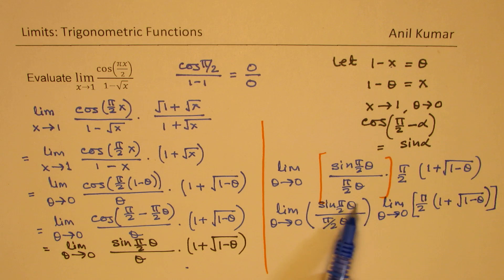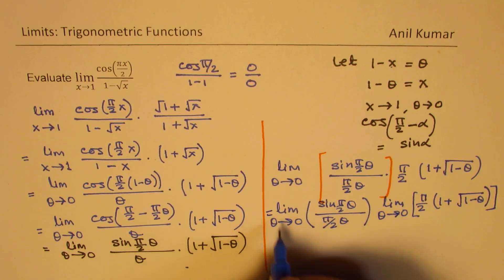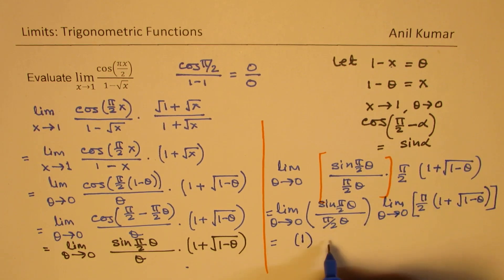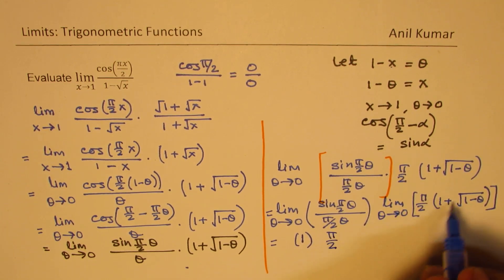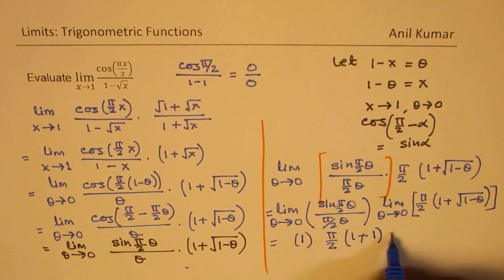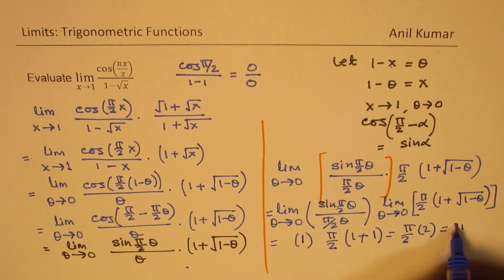Now since that first part is 1, we substitute theta equals 0 in the second part. We get π/2, and when theta is 0, square root of 1 is 1. So we get π/2 times (1+1), which equals π/2 times 2, which equals π.